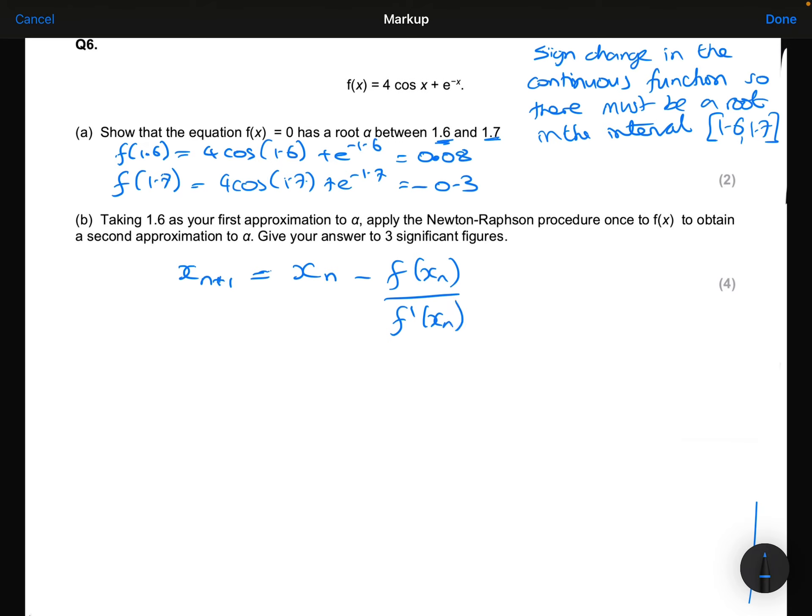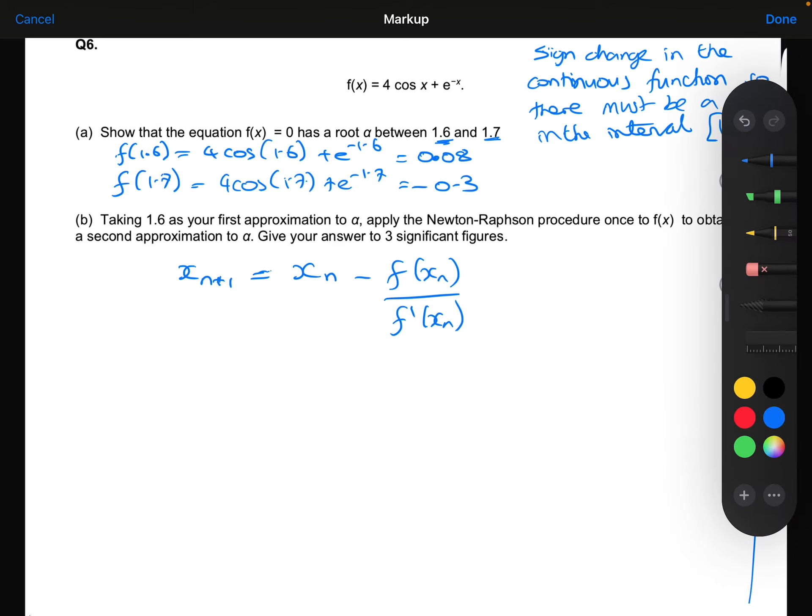To use this formula, I need to differentiate the function to get f'(x). Cos differentiates to minus sine, so we get minus 4 sine x. The exponential differentiates to the exponential, but I need to multiply by minus 1 because of the chain rule, so this becomes minus e to the minus x.